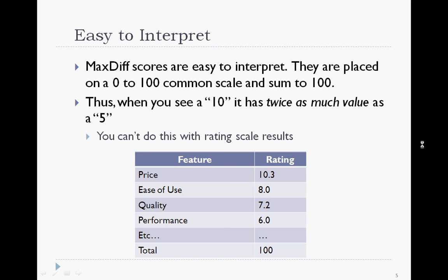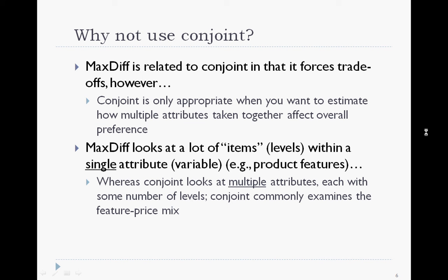Here's that easy interpretation right here. All of the items get lined up on a 100-point scale. This is ratio-scale data, so we can literally say that an item rated a 10 has twice as much value as an item rated a 5 — twice as much importance, twice as much preference. This is simply something that we cannot do with rating-scale data.